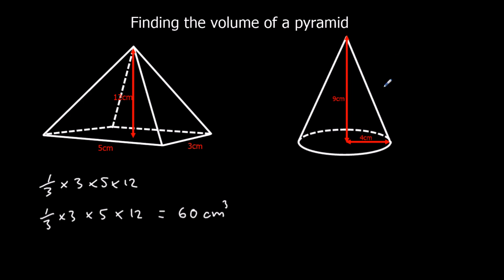Here we're going to leave the answer in terms of pi. We're going to do pi times the radius squared. So pi times four squared, times the height, and it's a third of that as well, because it's a cone, it's not a cylinder. So we've got a third times pi times sixteen times nine.